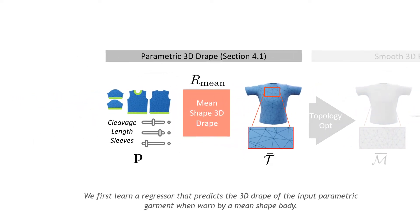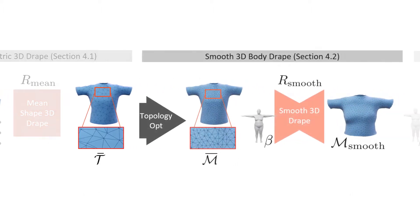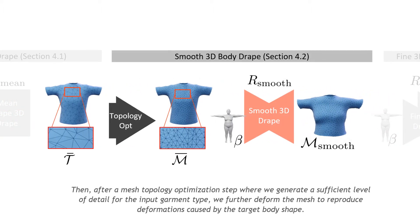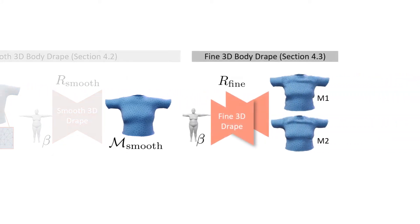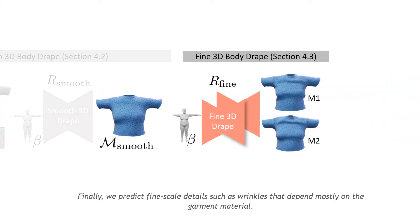We first learn a regressor that predicts the 3D drape of the input parametric garment when worn by a mean shape body. Then, after a mesh topology optimization step, where we generate a sufficient level of detail for the input garment type, we further deform the mesh to reproduce the deformations caused by the target body shape. Finally, we predict fine-scale details such as wrinkles that depend mostly on the garment material.